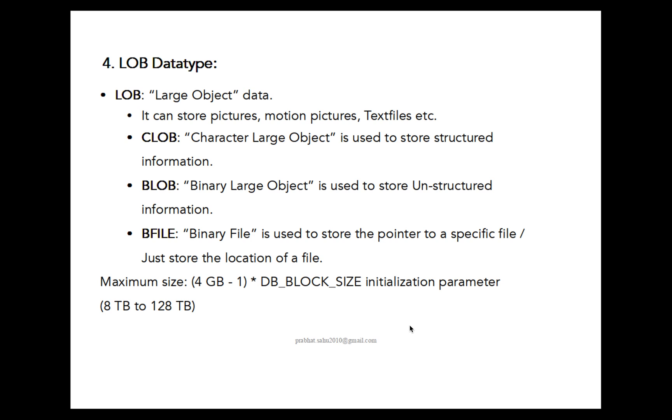Binary files means it will store the pointer of a specific file which may be kept outside the database server. So within your database you will give that path to that file. Suppose one big file is there, in any application you are seeing any long video, suppose 4 GB or 10 GB of video. That big file won't store the complete information within the database, so it will keep that file outside the database and keep one pointer to that file within the database. Those fields you can store within BFILE or binary file. Maximum size it will be 4 GB to 128 TB of data it can store in this LOB data type.